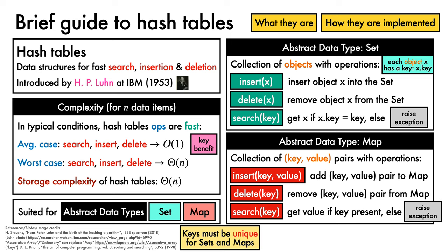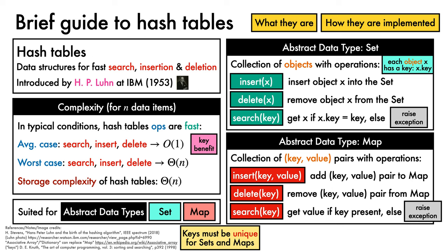In the case of both sets and maps, keys must be unique. Given their similar operations, implementations of both sets and maps will benefit from fast search, insert, and delete operations. We'll focus on sets for this video, but we can trivially achieve a map-like interface simply by adding a value attribute to each object in the set.